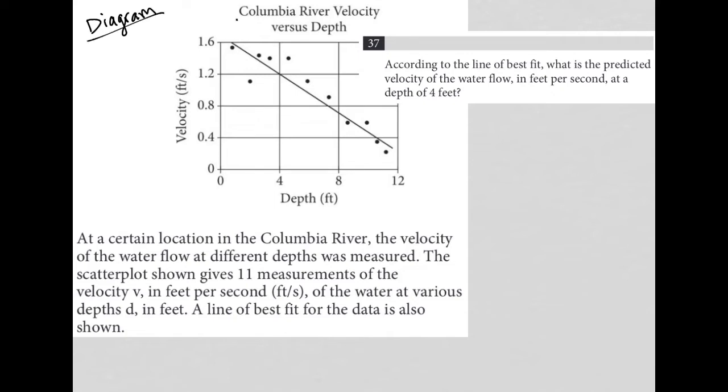The title of the graph says Columbia River Velocity versus Depth, where the y-axis is velocity and the x-axis is depth. As the depth gets higher, as we get deeper, the velocity is decreasing. We have a line of best fit here with points all around that line. Let's clean this up so I don't get confused by my points versus the points from the question.